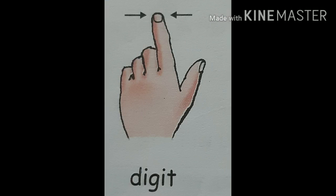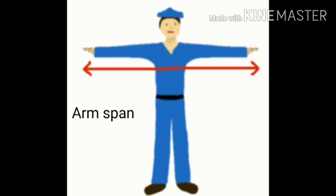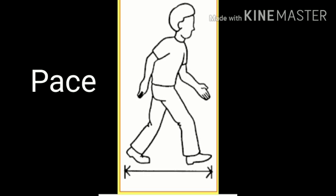Now this is the digit — one finger represents a digit. Next is arm span: from the tip of your left hand's middle finger to the tip of your right hand's middle finger is one arm span. Yes children, stretch your arms and see your arm span. Next is pace — using your feet, you can also measure using pace.